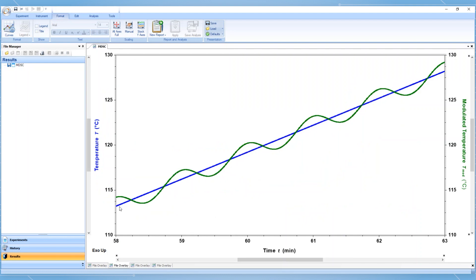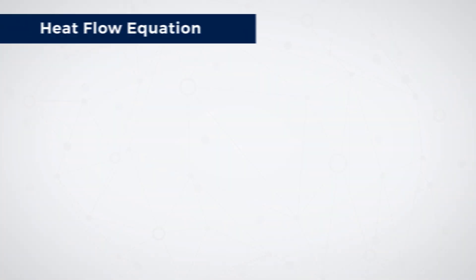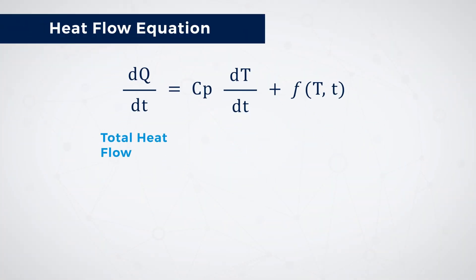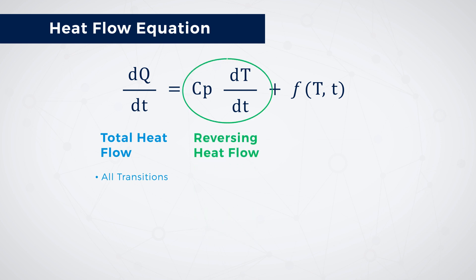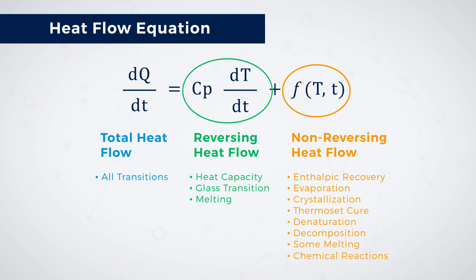By controlling the instantaneous heating rate in this way, MDSC separates out which component of the total heat flow is able to follow the temperature modulation. This component is referred to as the reversing heat flow. The reversing heat flow component is a function of the sample's intrinsic heat capacity and the rate of temperature change. The other part of the heat flow equation is a function of absolute temperature and time — the kinetic component. This term does not follow modulation and is the non-reversing heat flow. It is important to remember that reversing and non-reversing heat flow signals are not necessarily a measure of reversible and irreversible transitions.